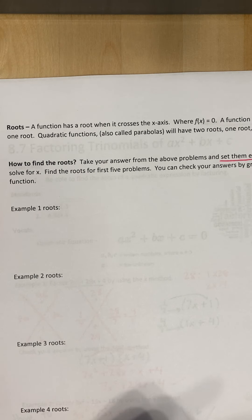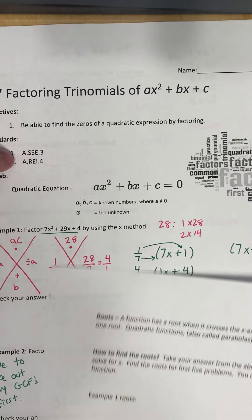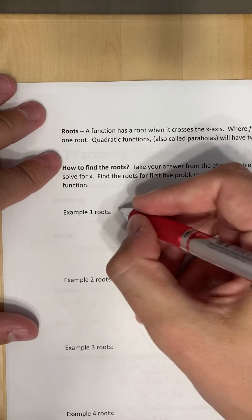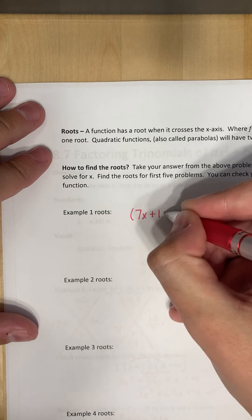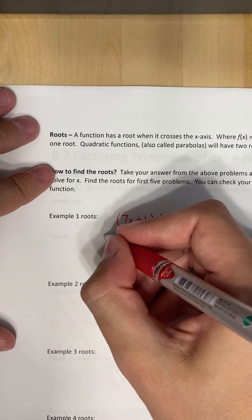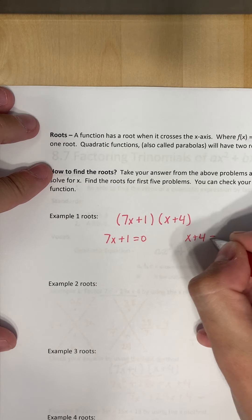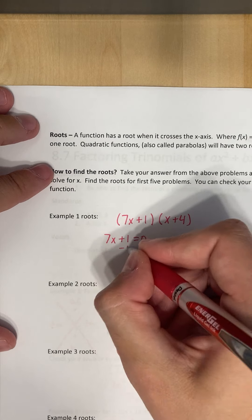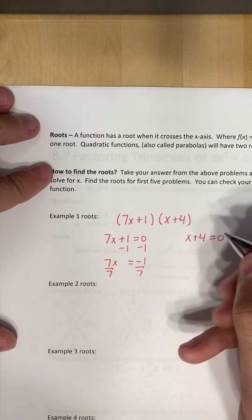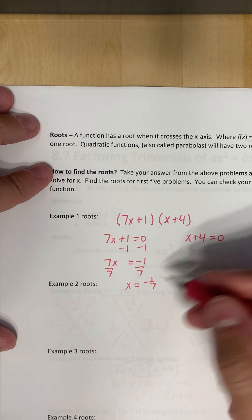Let's go ahead and let's see what was our answer for example one. Example one, we had this seven x plus one x plus four. So we'll have seven x plus one and x plus four. So in order to find the roots, we're going to take each of these and set them equal to zero. And what we find out is that we get seven x equal to negative one. I'm going to divide by seven, divide by seven, and I get that x is equal to negative one seventh. That's my first root.